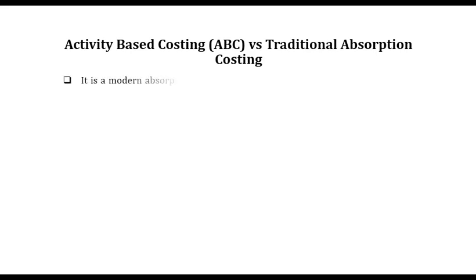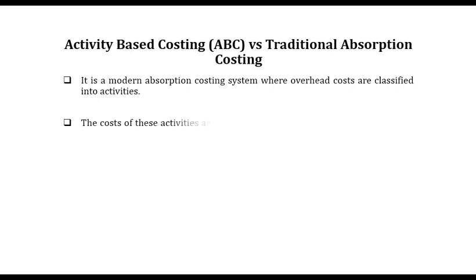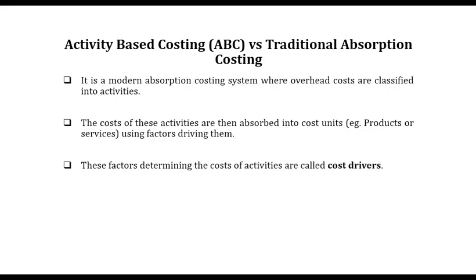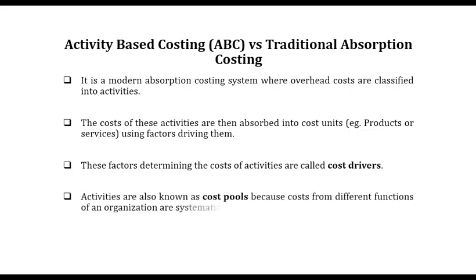What is activity-based costing? It's a modern absorption costing system where overheads are classified into activities and then absorbed to products. The cost of these activities are absorbed into cost units, such as products or services, using factors driving them. These factors are termed cost drivers — factors that determine the cost of activities. Note that activities are also referred to as cost pools, so these terms are used interchangeably.